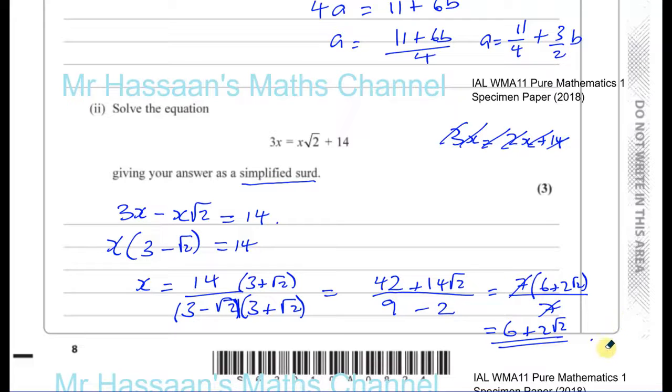So that's how you deal with questions of this form. You give your answer as a simplified surd. The trick here is to bring the x's on one side and then take out x as a factor. That's the trick here. That's question number 4 done now.